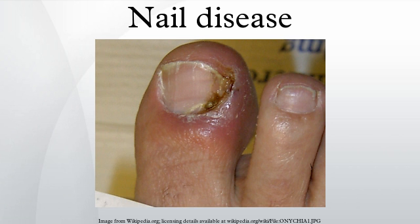Onychomadesis is the separation and falling off of a nail from the nail bed. Common causes include localized infection, minor injury to the matrix bed, or severe systemic illness. It is sometimes a side effect of chemotherapy or X-ray treatments for cancer. A new nail plate will form once the cause of the disease is removed.